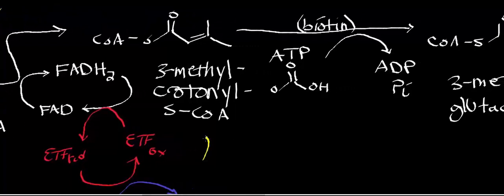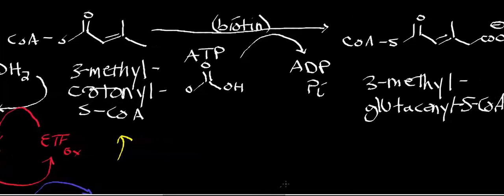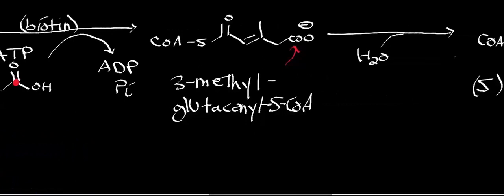Now we have 3-methylcrotonyl-S-CoA, which is going to be carboxylated in a biotin-dependent reaction. We're specifically going to carboxylate one carbon here in an ATP-dependent reaction, because it's a biotin-dependent carboxylase. The carbon donor comes from bicarbonate — all biotin-ATP-dependent carboxylases use bicarbonate as the carbon donor. That's going to generate 3-methylglutaconyl-S-CoA.